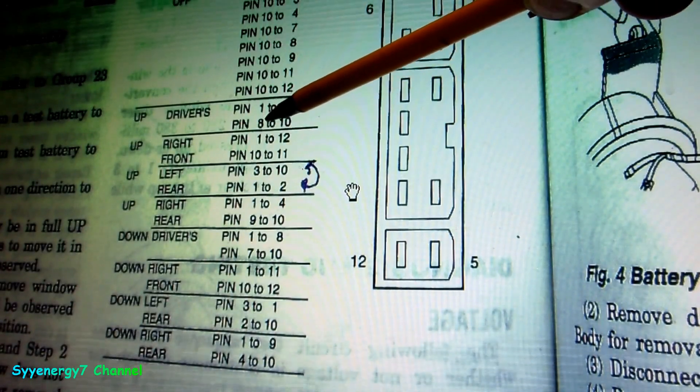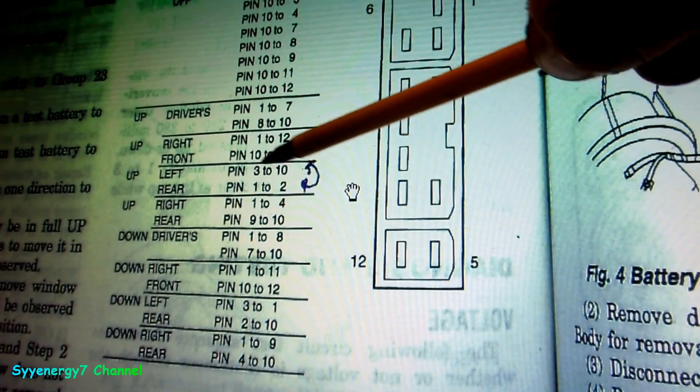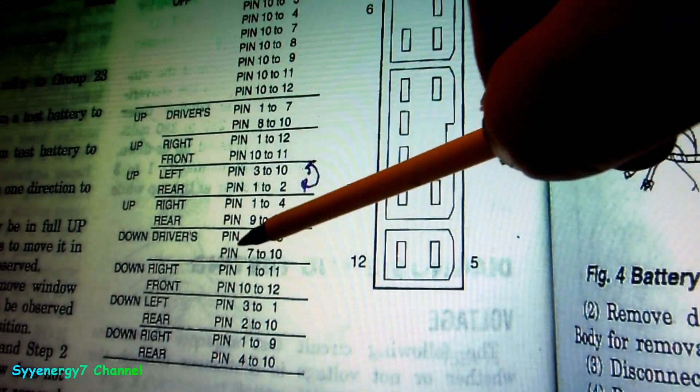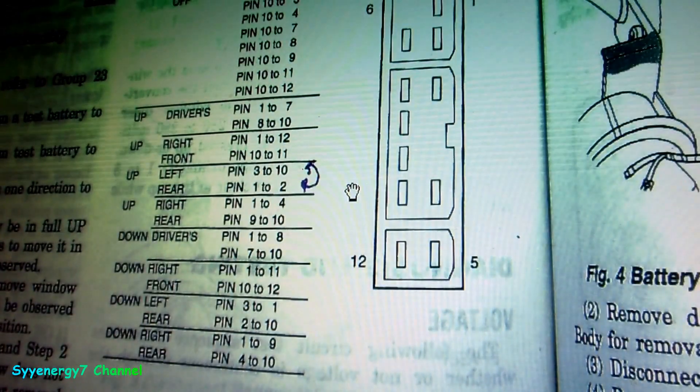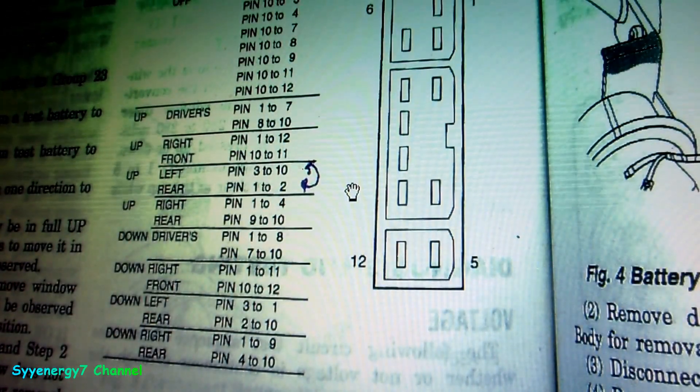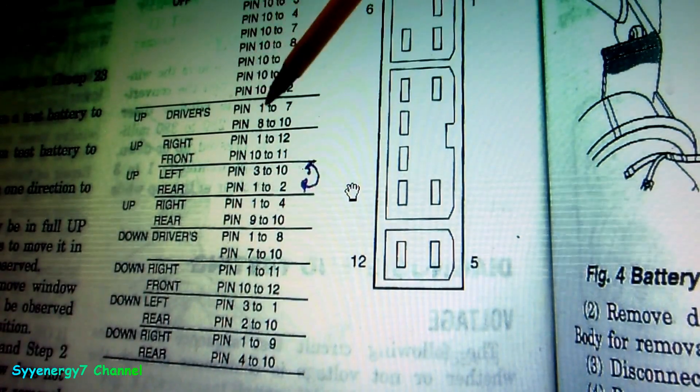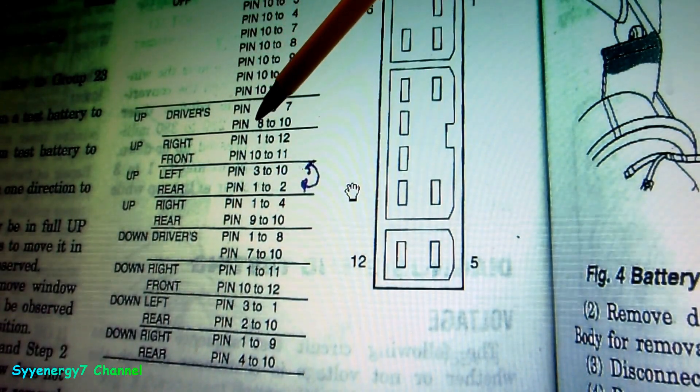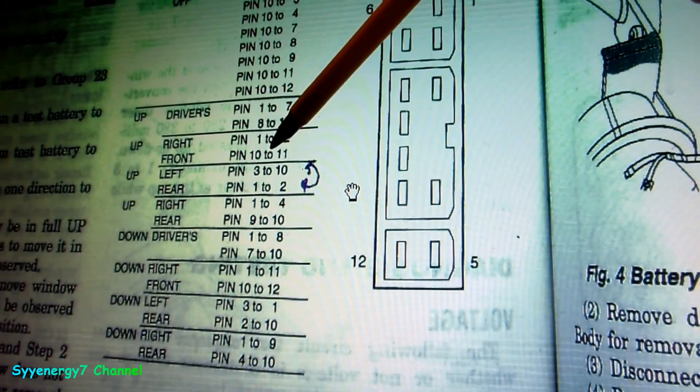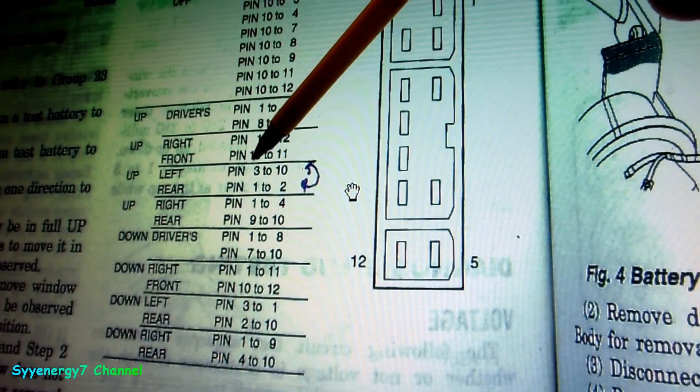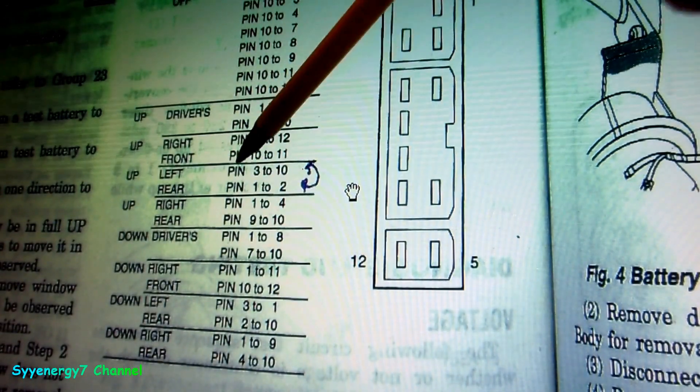So when you're looking at this, it's telling you here's 10 and 8, 10 and 11, 3 and 10, 10 and 9, 10 and 7, 10 and 12, 10 and 2, 10 and 4 - that's continuous power. Then the actual switch function: drivers up is 1 to 7, driver right passenger up is 1 to 12.